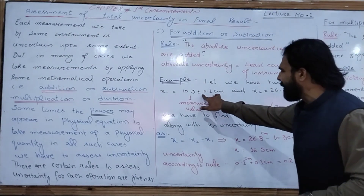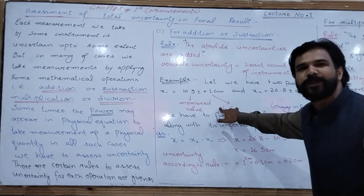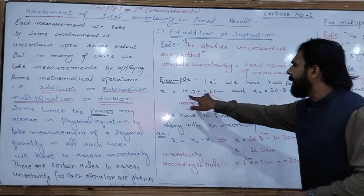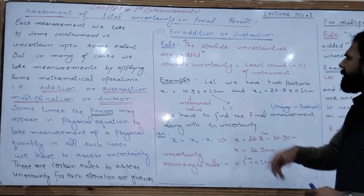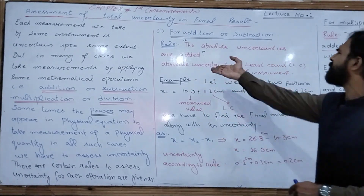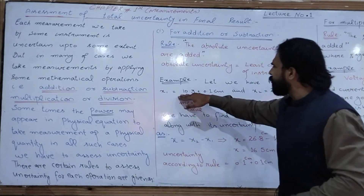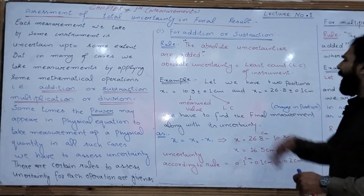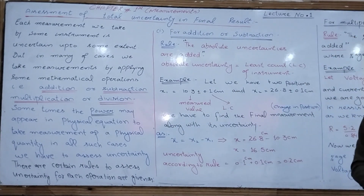This 0.1 cm is equal to the least count of the measuring instrument — in other words, it is the absolute uncertainty. So x1 = 10.3 ± 0.1 cm, where 0.1 cm is the least count and 10.3 is the measured value.